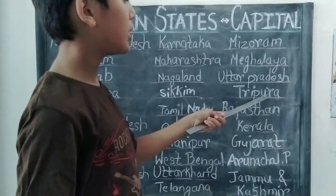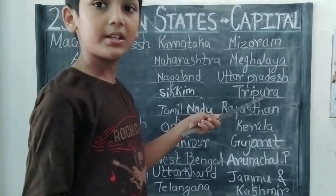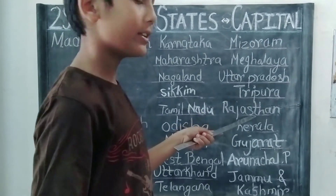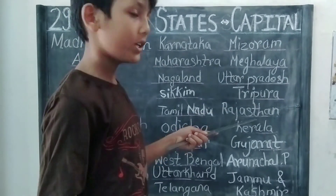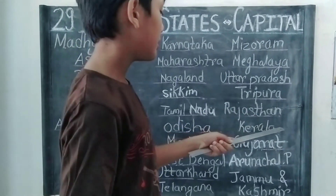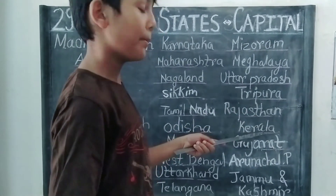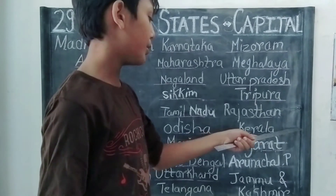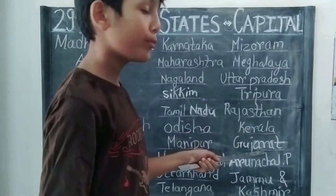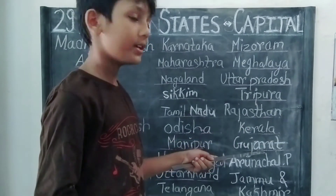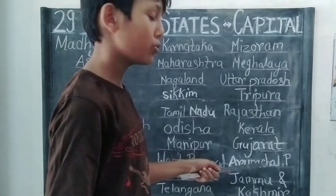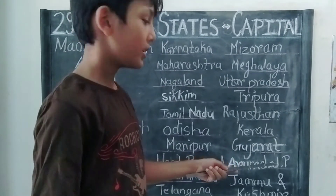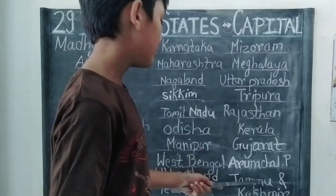The capital of Tripuru is Agartala. The capital of Rajasthan is Jaipur. The capital of Kaila is Tiruvannampuram. The capital of Gujarat is Gandhinagar. The capital of Arunachal Pradesh is Ithnagar.